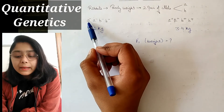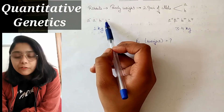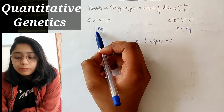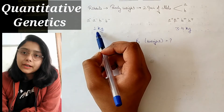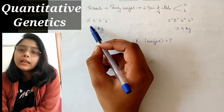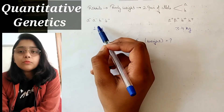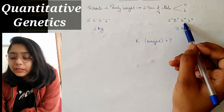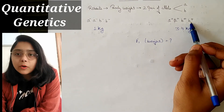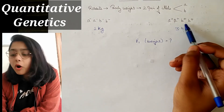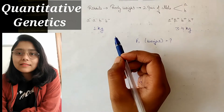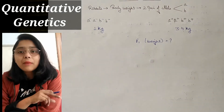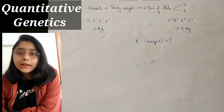उन्होंने बोला कि A negative, A negative, B negative, B negative — rabbit का जो body weight होगा वो 1 kg होगा. Means सारे recessive होंगे, सारे negative होंगे तो body weight 1 kg होगा. And A positive, A positive, B positive, B positive — सारे positive होंगे तो body weight 3.4 kg होगा. सारे positive, सारे negative means हमें extreme points दिये हैं — extreme highest weight and extreme lowest weight.